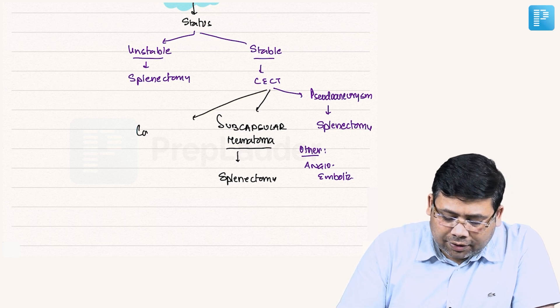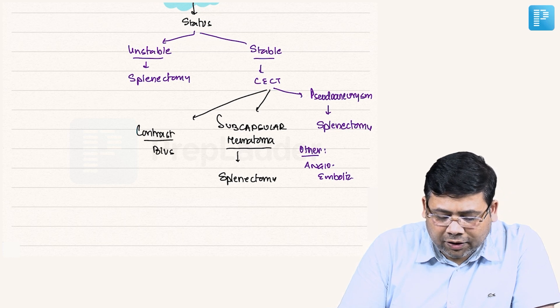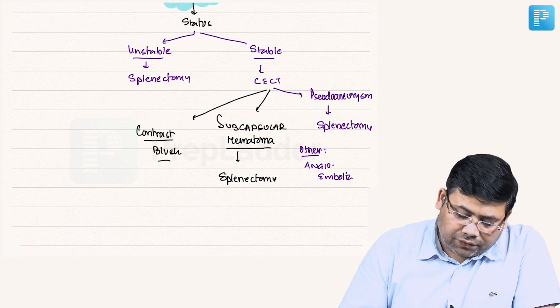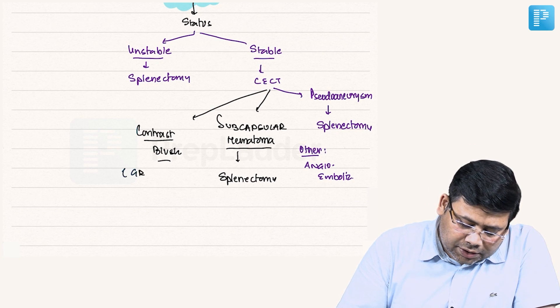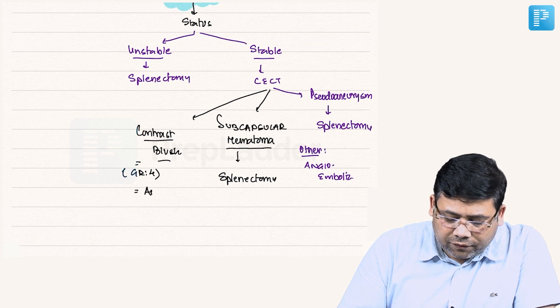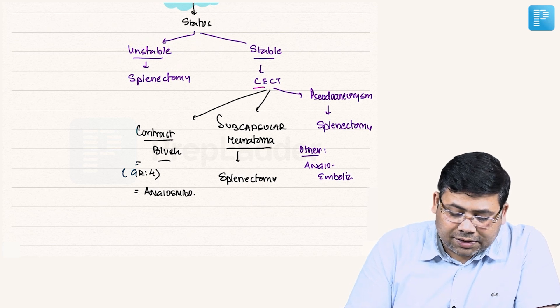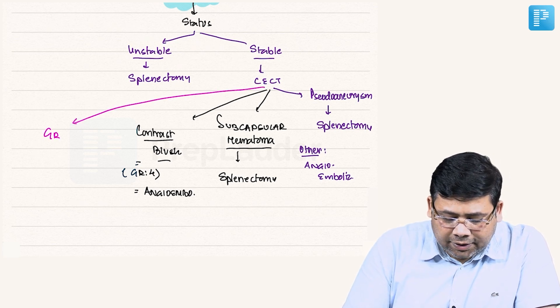Other findings: you can get to see contrast blush. Contrast blush is defined as a small controlled leak from the marginal vessels of the hilum. Remember, despite the fact it is equal to grade 4, we go for angioembolization.